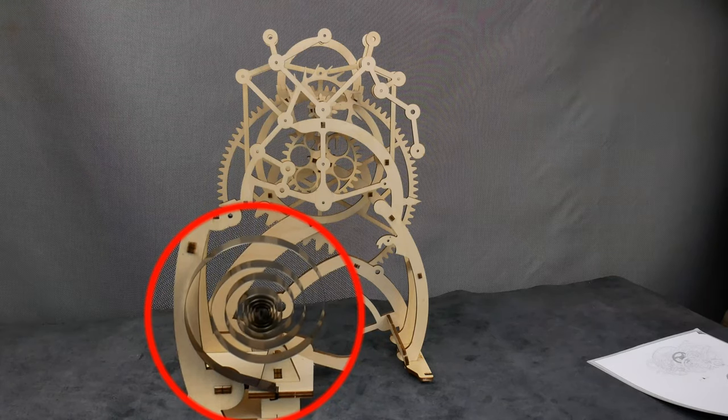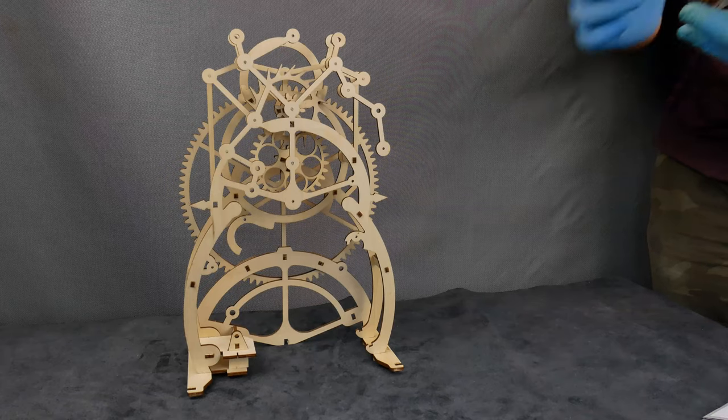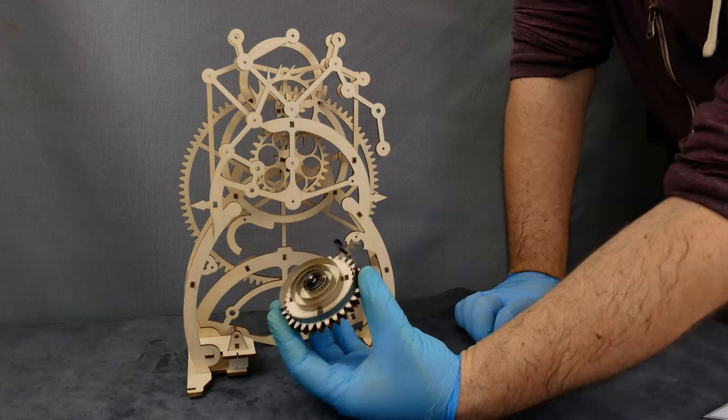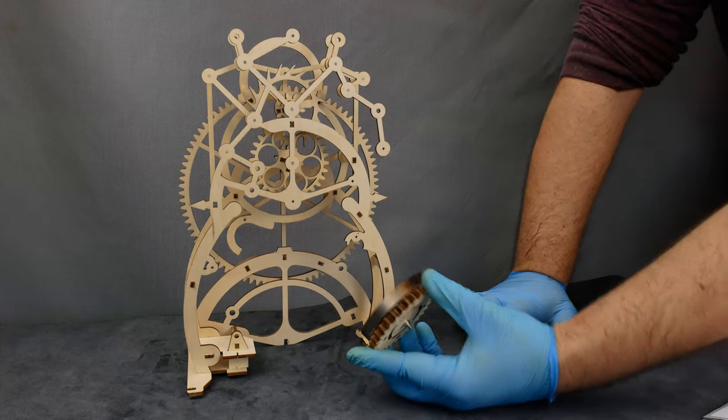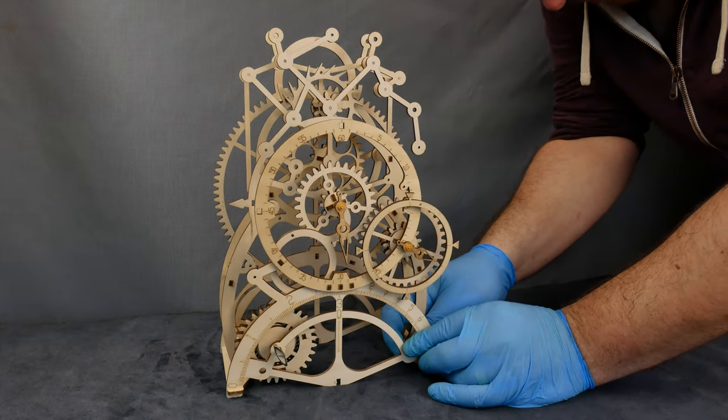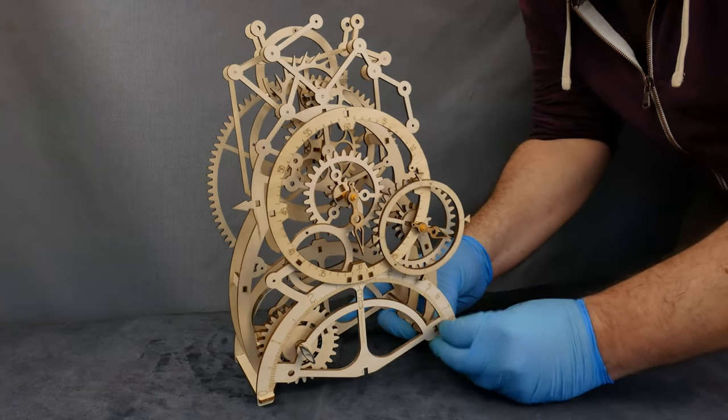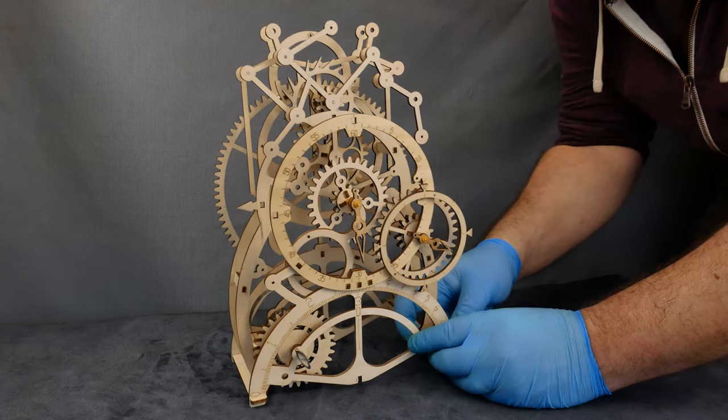Next, we're putting in the mainspring. One end of the spring hooks onto the frame and the central end of the spring goes into this split pin coming off the back of the ratchet wheel. I attach the ratchet wheel to the front frame using the key. I then attached the spring to the ratchet wheel and brought the frames together, lined everything up, hooked the spring into the frame and then pushed the two frames home.